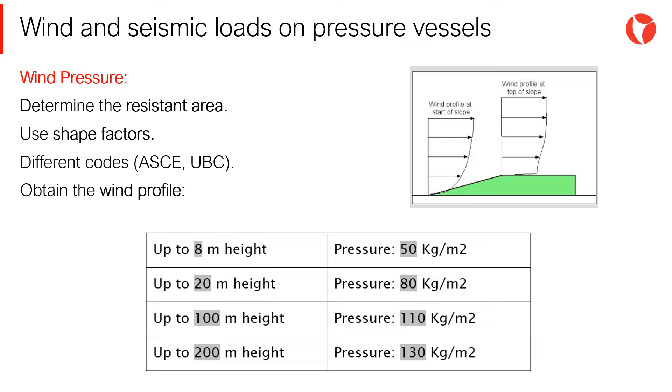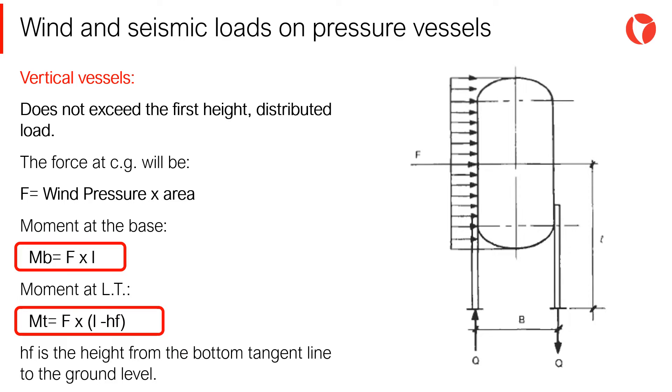Depending on the local legislation, different methods will be followed to determine the wind profile as indicated in the figure. When the height of the vessel does not exceed the first height threshold of the wind pressure profile, only the distributed load value is considered as shown in the figure.